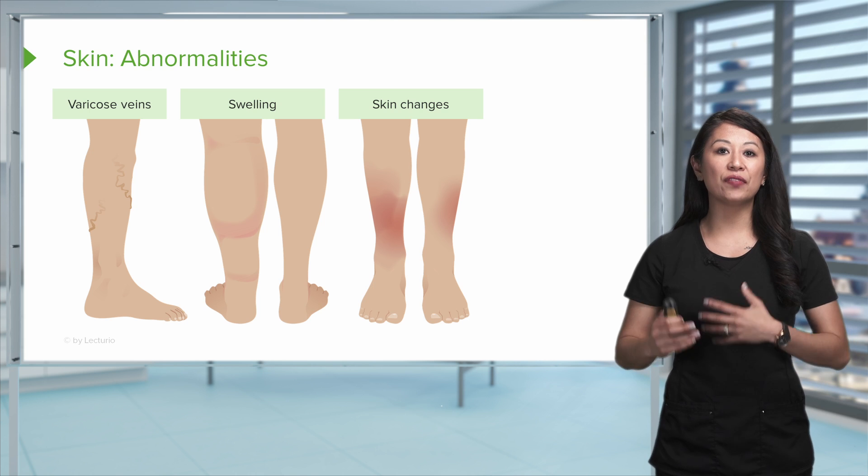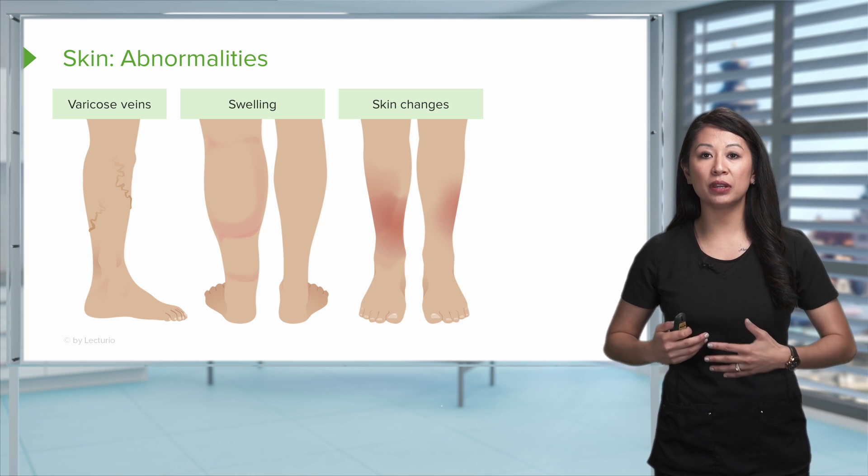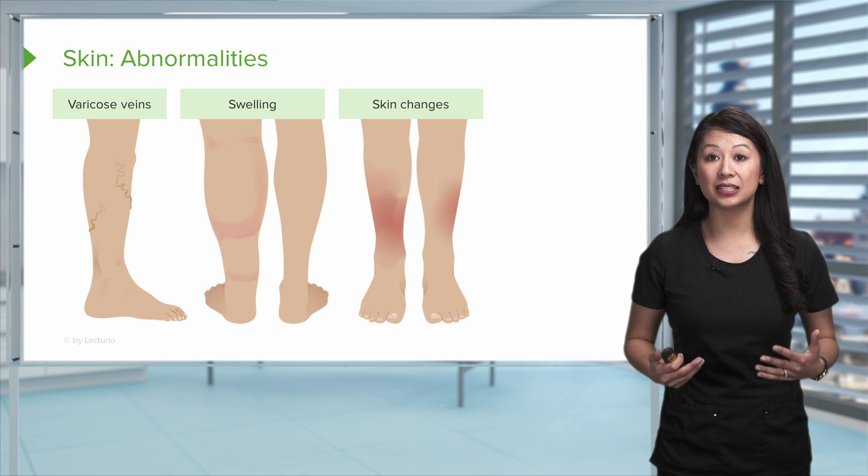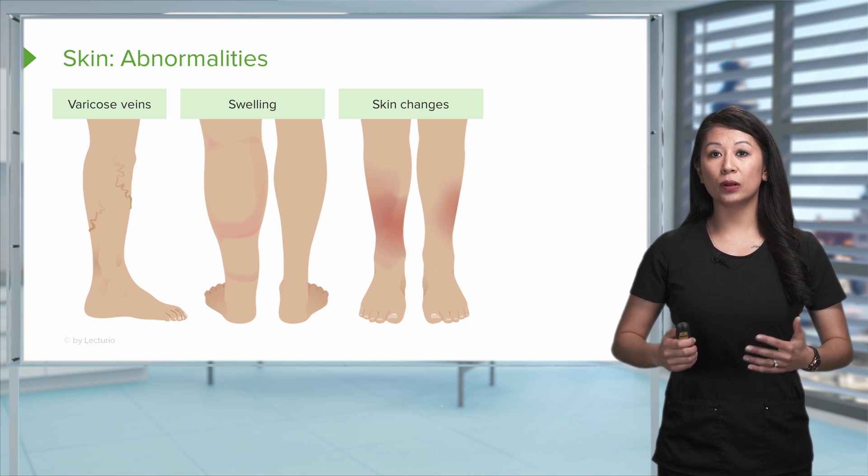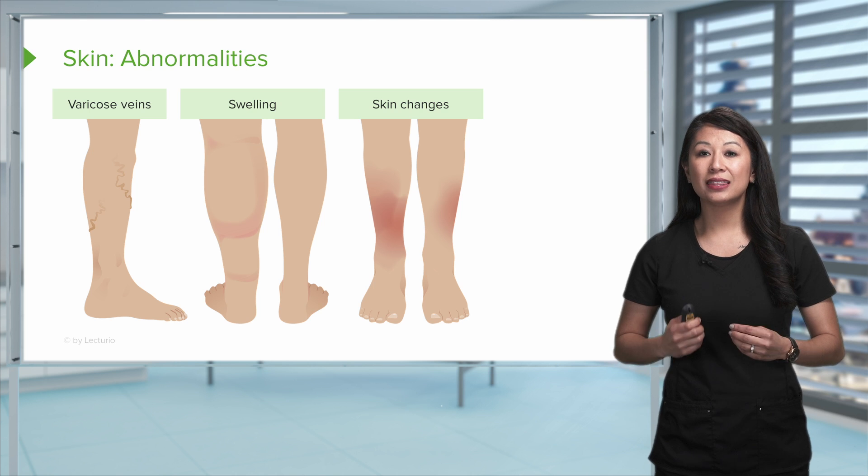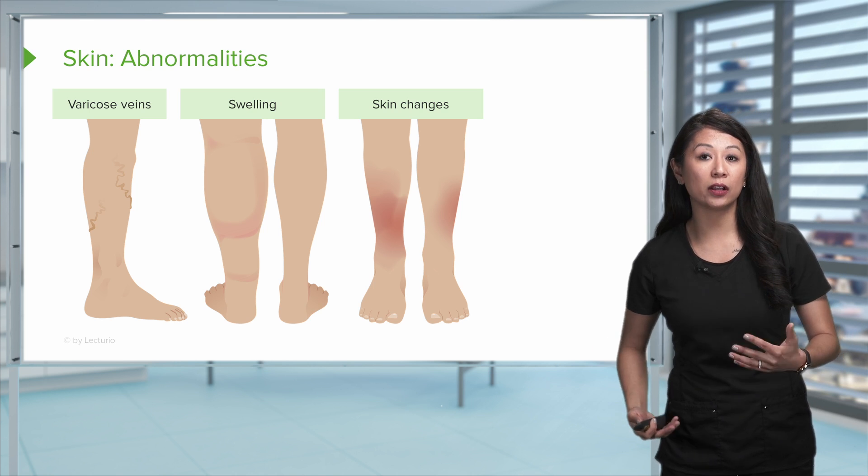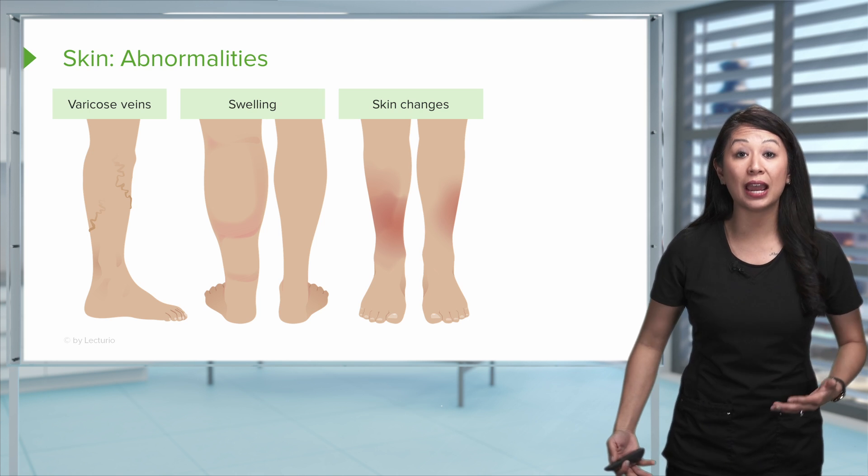There can be some various skin changes. This can be from irritation, medications, or diseases. One thing to note, if you're talking about a patient with venous disease, they may have some redness, some irritation on the shins, or around their ankles, or around their calves.